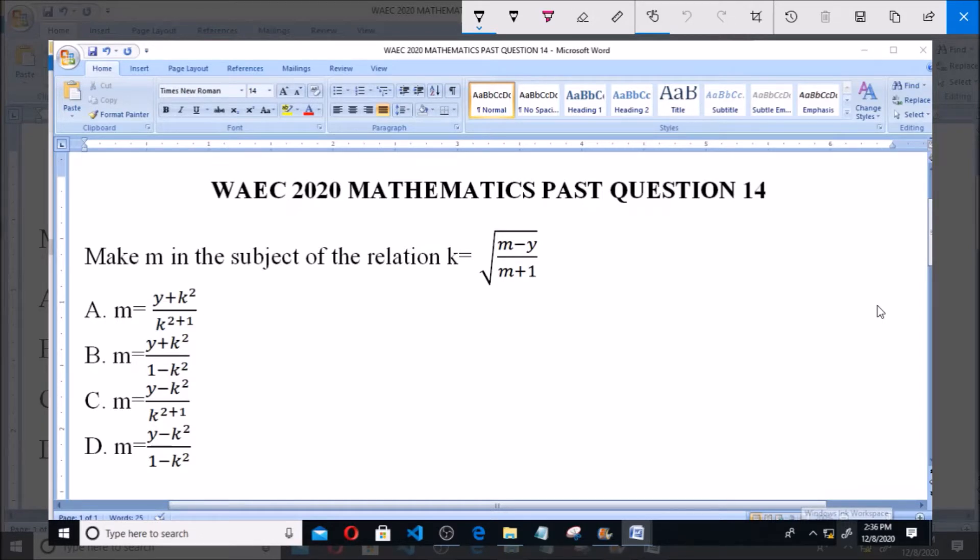Make m the subject of the formula for the relation k equals the square root of (m minus y) over (m plus 1).